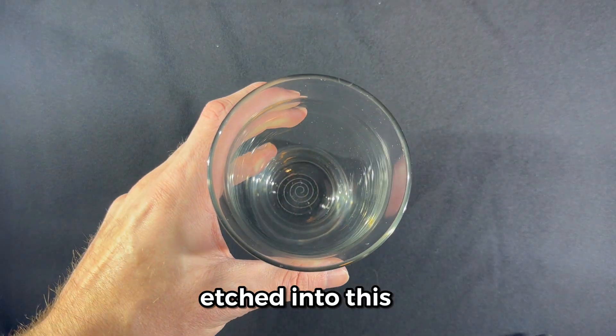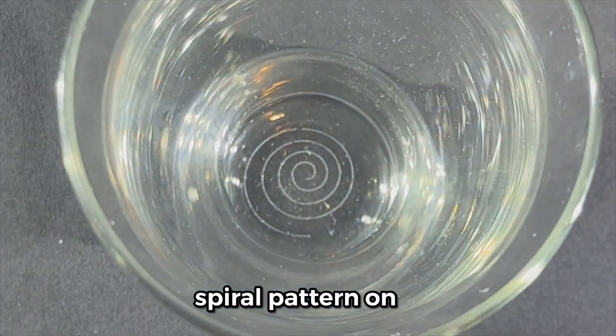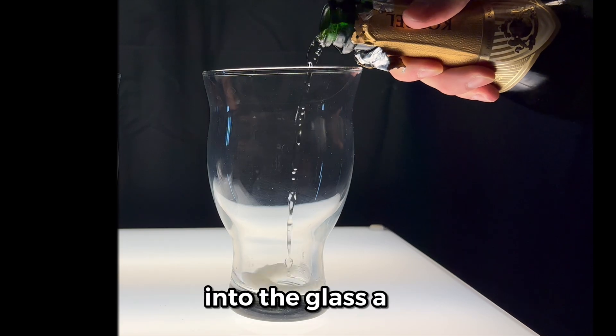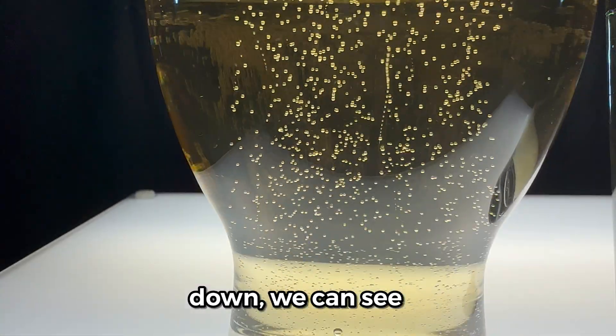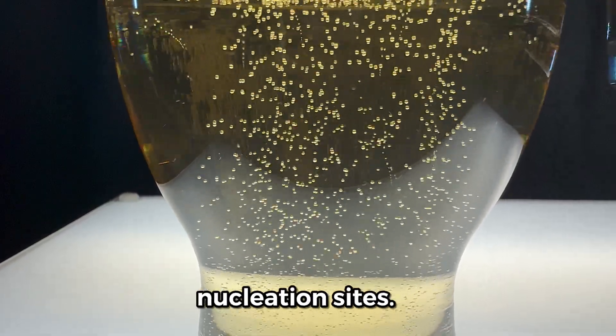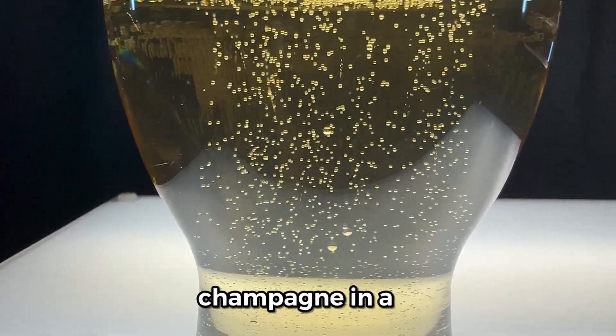Check out the nucleation sites etched into this glass. They make a spiral pattern on the bottom. So when champagne is poured into the glass, a bunch of bubbly foam is produced. And when the foam dies down, we can see there's lots of bubbles being produced at the nucleation sites.